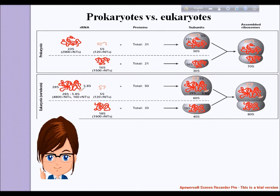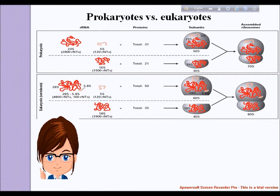In prokaryotes, the 70S ribosome contains the 23S, 5S, and 16S subunits. The 5S is 120 nt, 23S is 2906 nt, and 16S is 1542 nt. Eukaryotic ribosomes contain the 80S subunit, which contains the 28S, 5.8S, 5S, and 18S rRNAs.